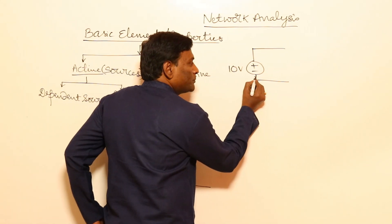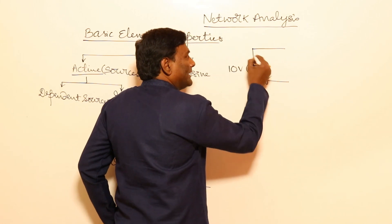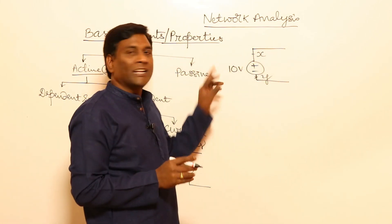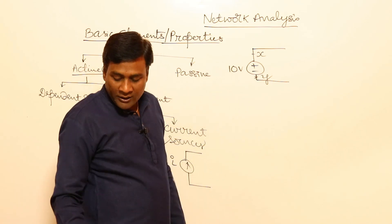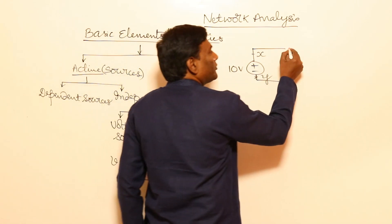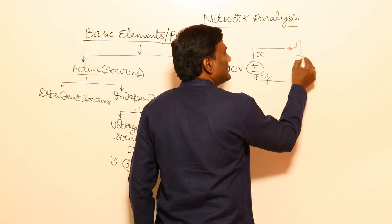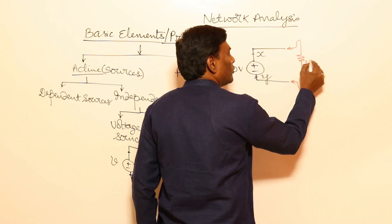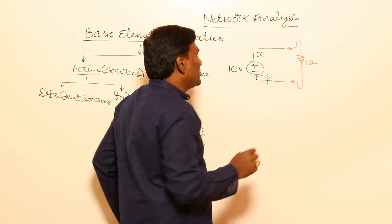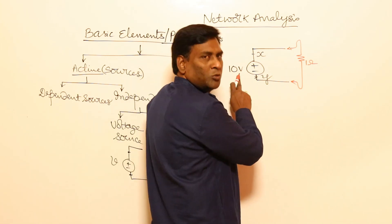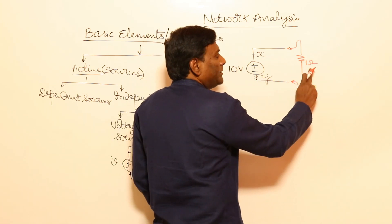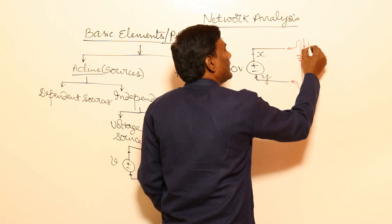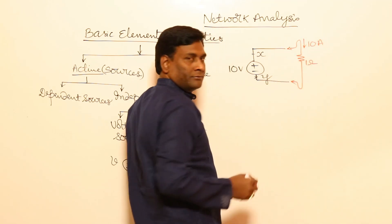With respect to the Y terminal, the X terminal has a higher potential of 10 volts constantly. For example, if I connect a resistance of 1 ohm, 10 volts will appear here, 10 divided by 1 — 10 amperes current will flow.